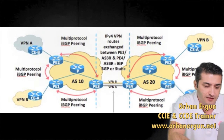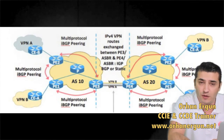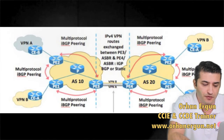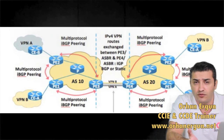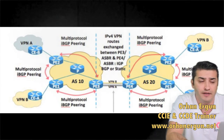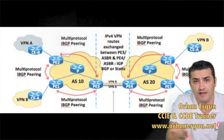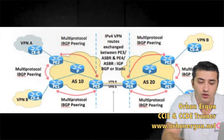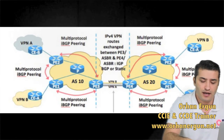Hi everyone, I'm Orhan Ayni. I'm going to explain Inter-AS MPLS VPN option A. In RFC 2547 there are three types of Inter-AS options defined: option A, option B, and option C. I'm going to explain in this first video Inter-AS option A, which is also known as the back-to-back VRF approach.